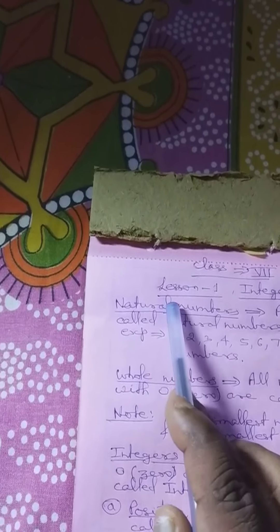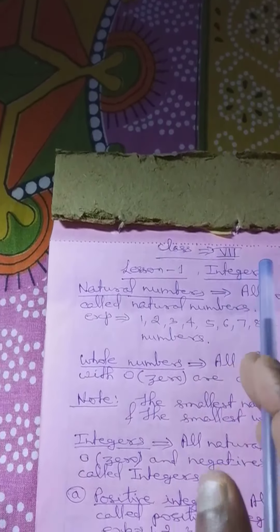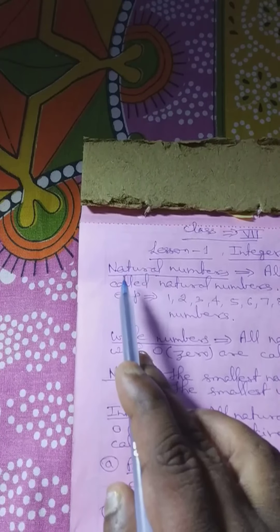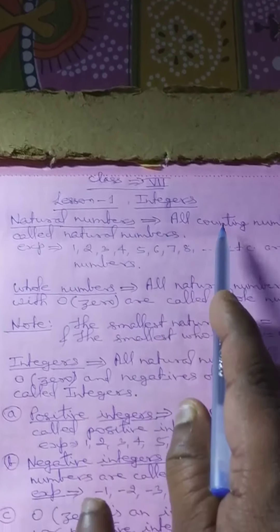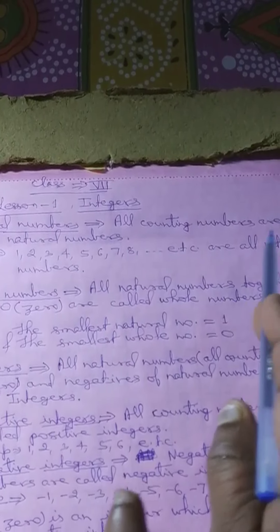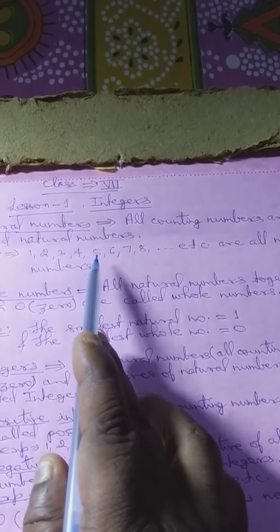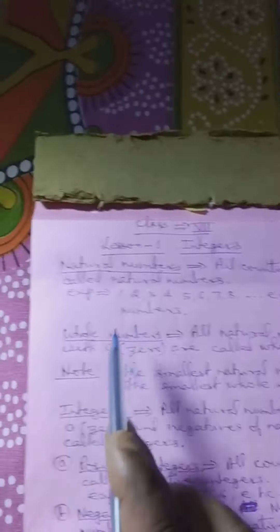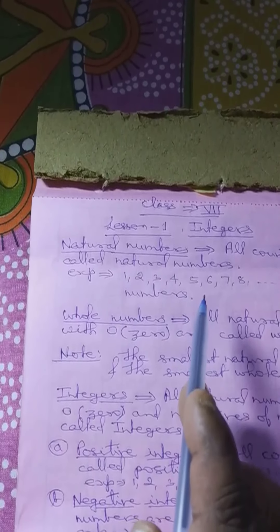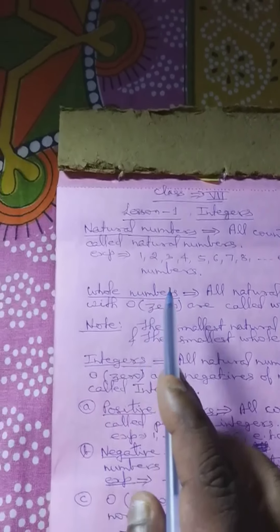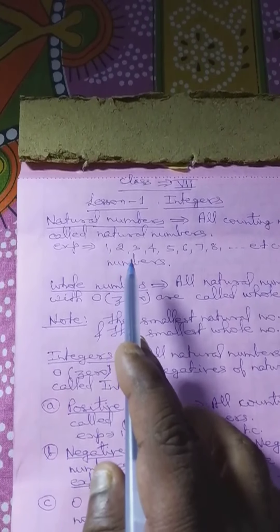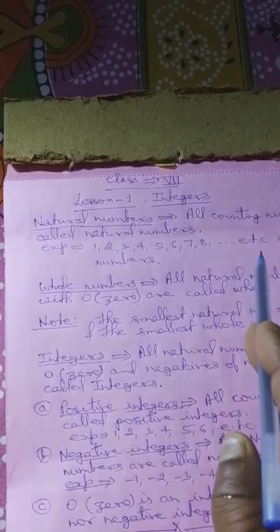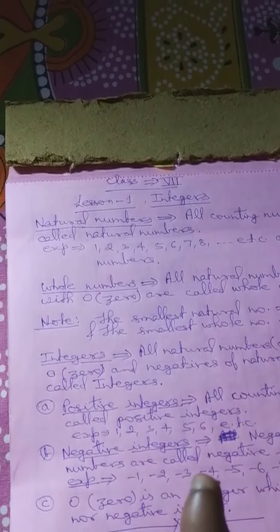Students, lesson first: integers. For this, it must be known what is the meaning of natural numbers. All counting numbers are called natural numbers. 1, 2, 3, 4, 5, 6, 7, 8, 9, 10, etc. are all natural numbers.